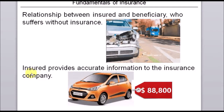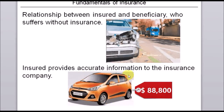The next fundamental is that clients must provide accurate and full information to the insurance company so it can correctly calculate expected losses and the premiums to charge. For example, imagine I have a car worth $15,000 — I wouldn't be able to insure it for over $88,000. I would have to provide accurate information about the car's value, otherwise there would be an incentive to total the car, resulting in a real loss of only $15,000 but gaining a large profit from the $88,000 insurance payout. If this were allowed, insurance companies could not survive.